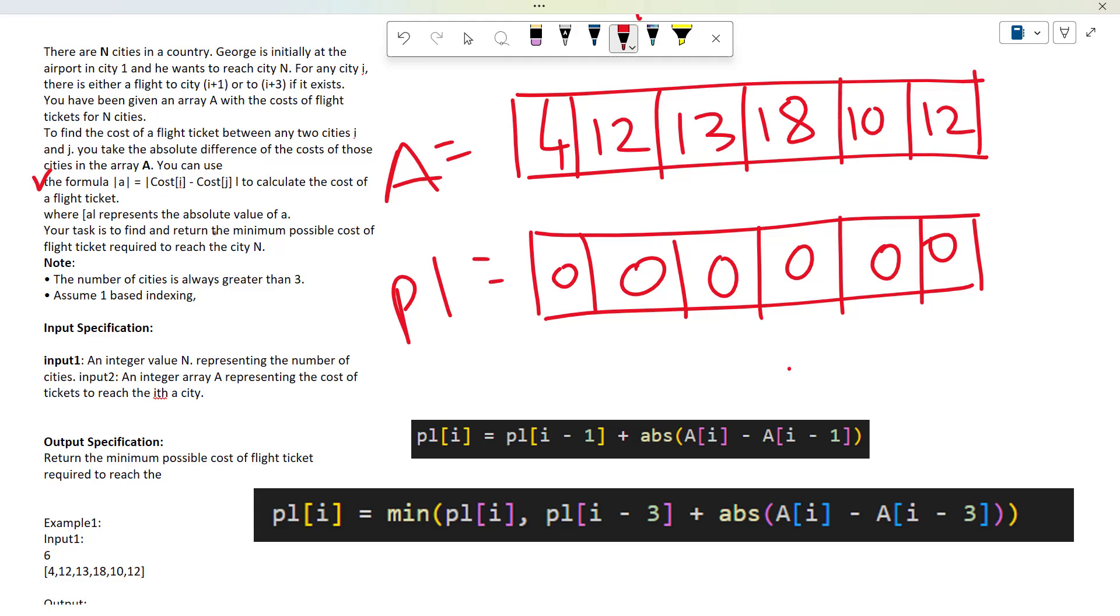They're asking us to return the minimum possible cost of flight ticket required to reach city N. The person will start from the starting array and wants to go to the last city.